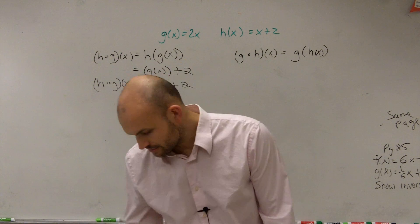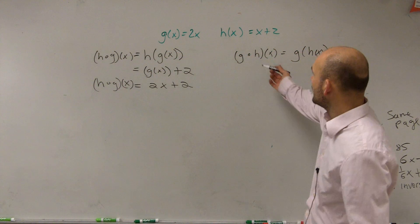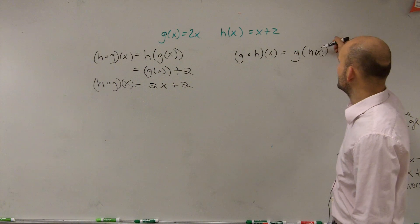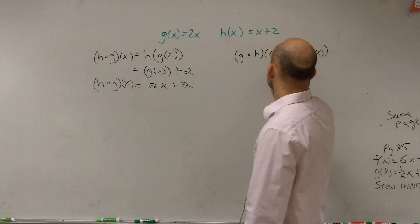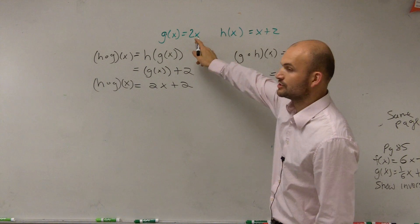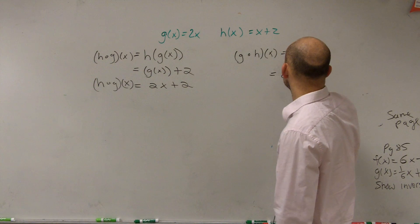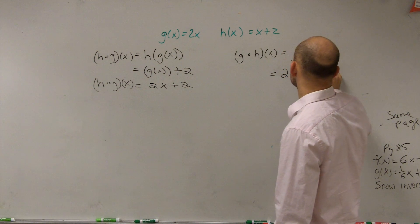Now let's go back and do the other way. So now I have g of h of x. That means I'm going to plug h of x into the g of x function. So I take my h of x function and plug it now into my x. So now I'm going to have 2 times h of x.